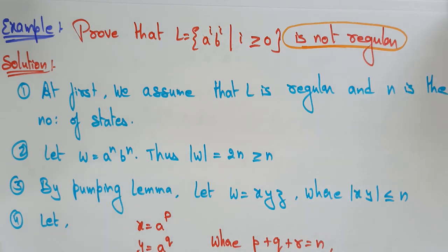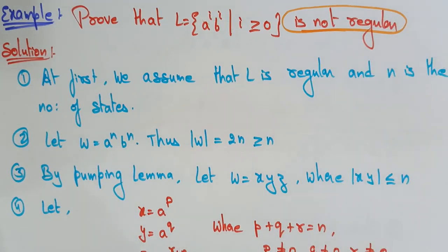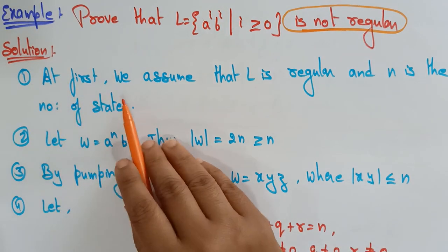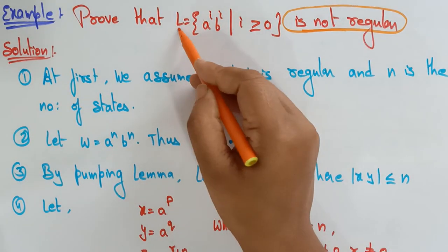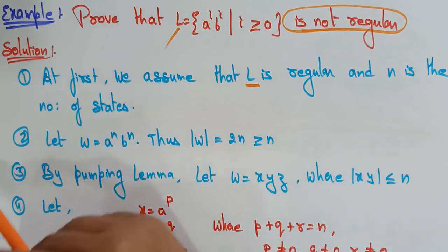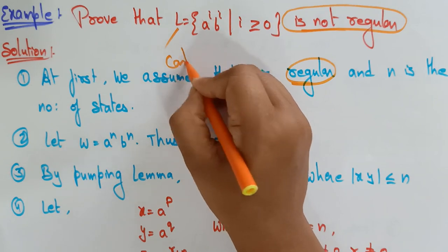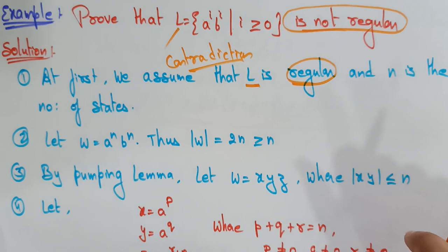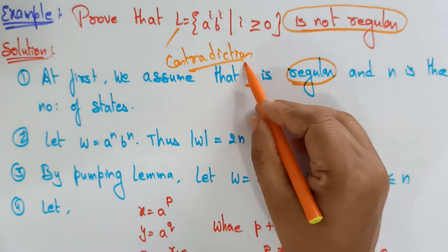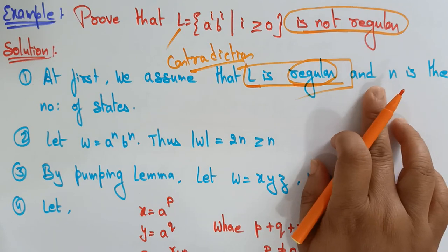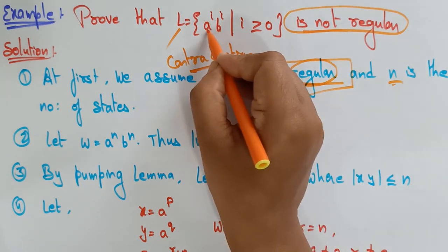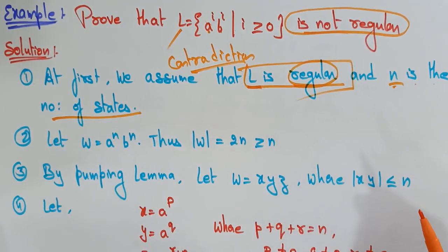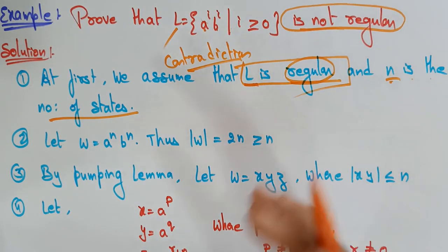To prove a language is not regular, you take the pumping lemma theorem. The steps we follow: first, assume that L is a regular language — just take the contradiction. So here, even though we want to prove it is not regular, we start by assuming L is regular and N is the number of states.